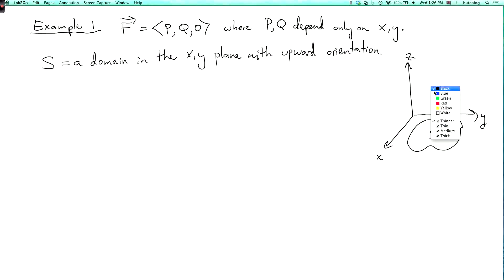Now the upward orientation means that the unit normal vector we use is going to be 0, 0, 1, so n is 0, 0, 1.